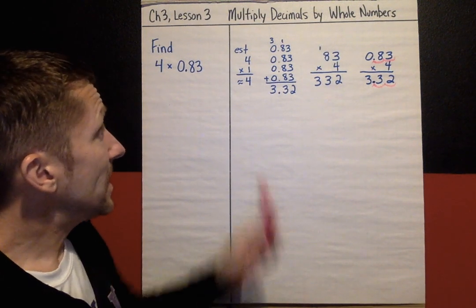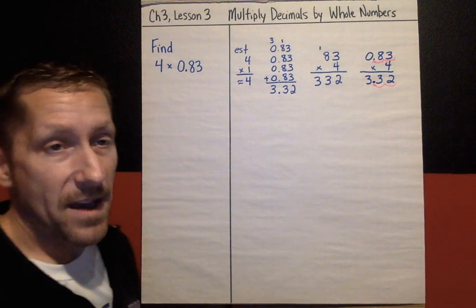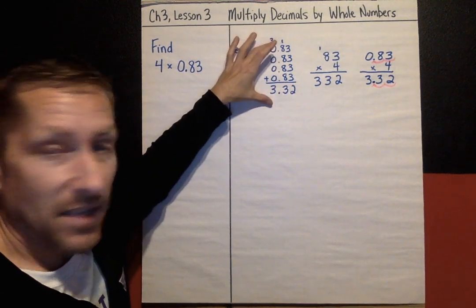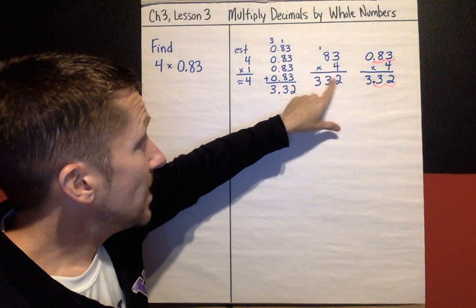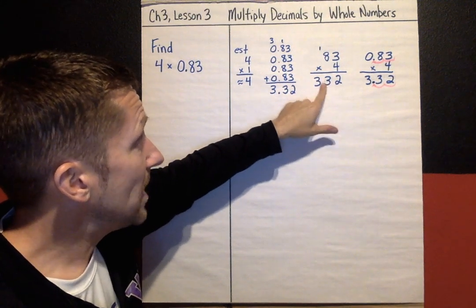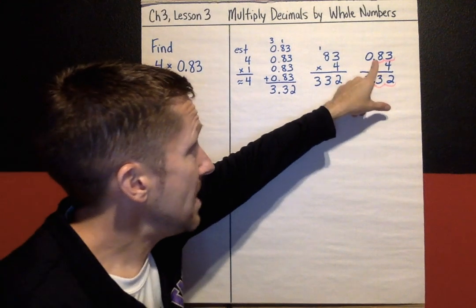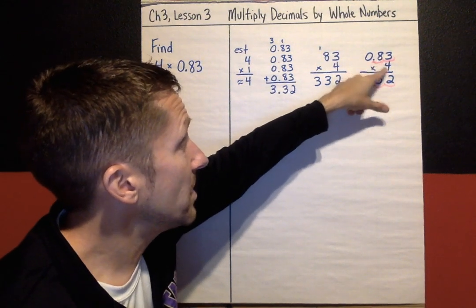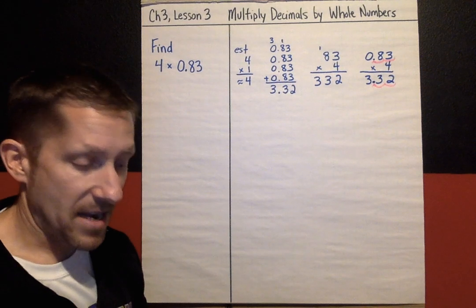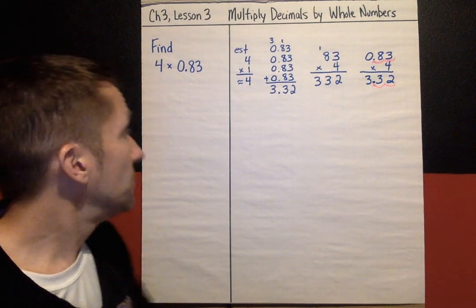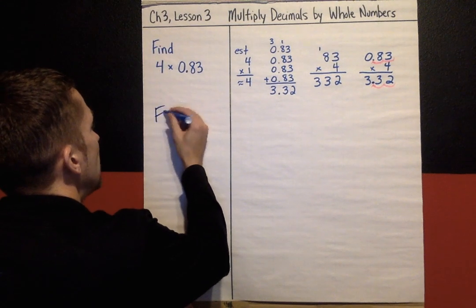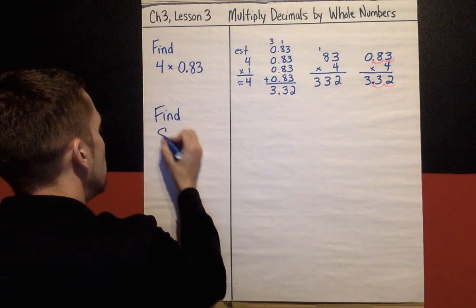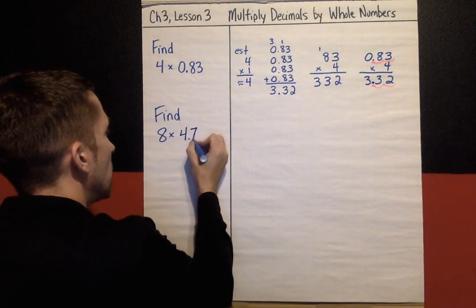So multiplying decimals by whole numbers: estimate if you can. I just want to show you again that multiplying is repeated addition. And then the steps are pretend there's no decimals, multiply as if there's no decimal at all. But then put in the decimal point and count the jumps. You need the same number of jumps that are in your factors in your product. Let's look at another example.